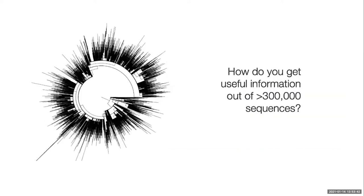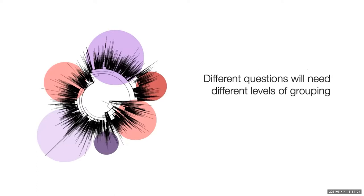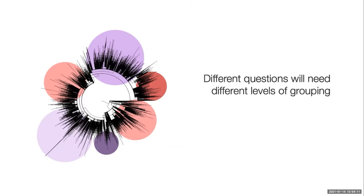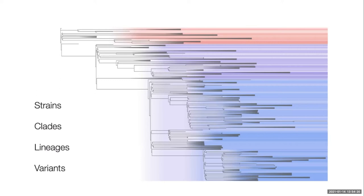The first question you need to ask is how you actually get useful information out of this many sequences. The first thing to do is to define different clusters or groupings, and then you can begin comparing these different groups. Different types of questions will need different levels of grouping — larger groupings can answer broad-scale questions like trends over time and overviews of the tree, while smaller groupings answer different questions.